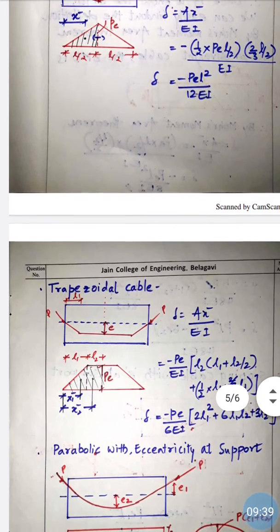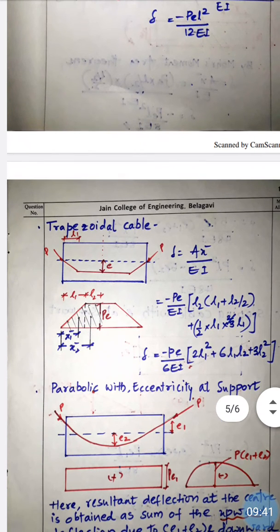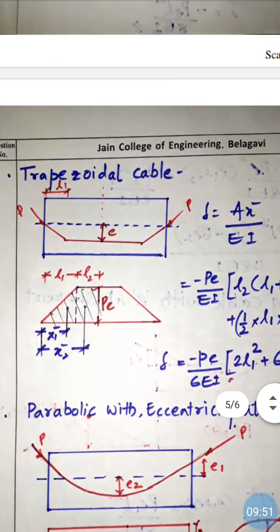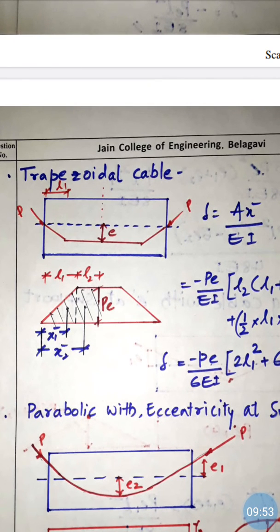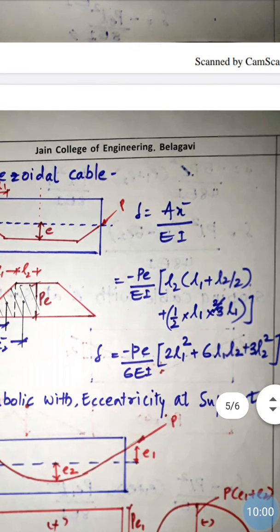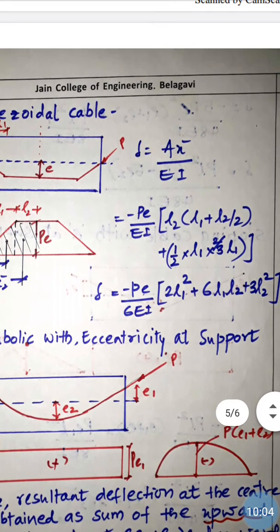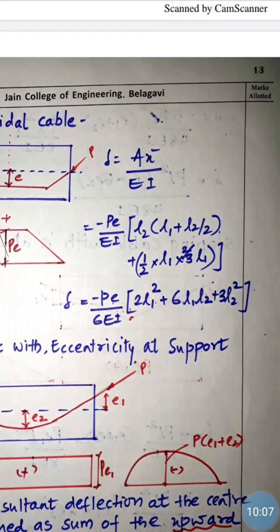For a trapezoidal tendon profile, the bending moment diagram is trapezoidal. The diagram is divided into two parts: one triangular and one rectangular, giving areas A1 and A2. Computing A1·x̄1 + A2·x̄2 divided by EI, the final deflection formula is: δ = −(Pe / 6EI) · (2L1² + 6L1·L2 + 3L2²), where L1 and L2 are the respective span portions.